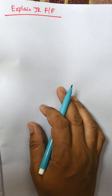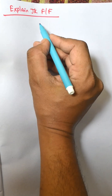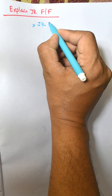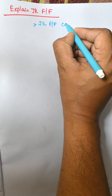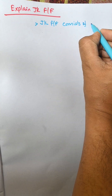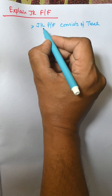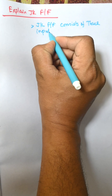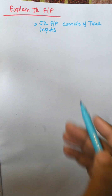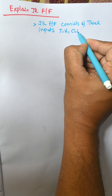Hi everybody. In this video I am going to discuss the JK flip-flop. The JK flip-flop consists of three inputs: J, K, and CLK.